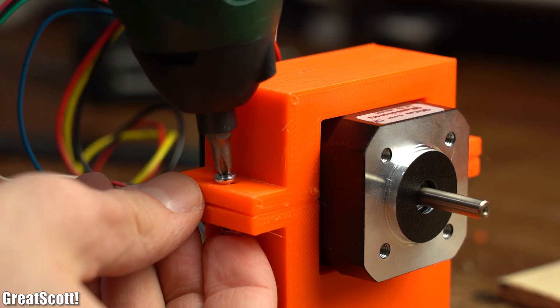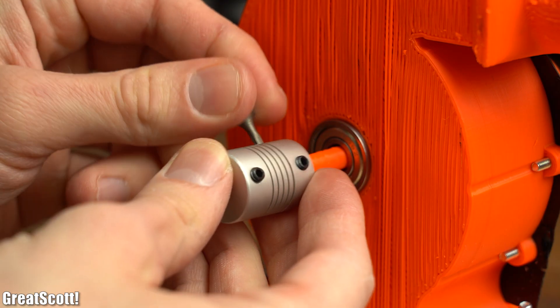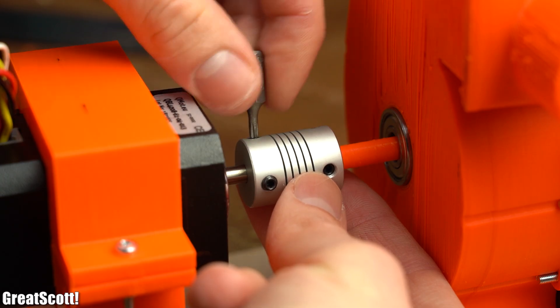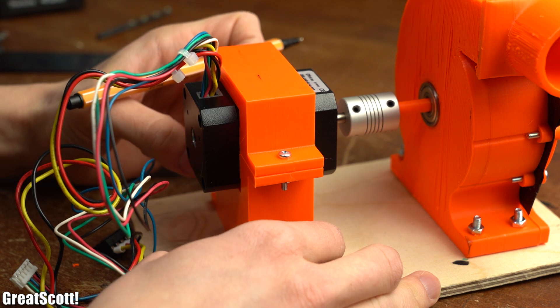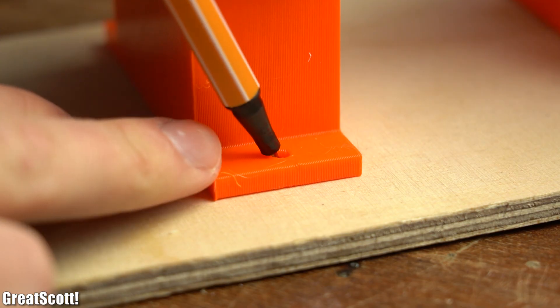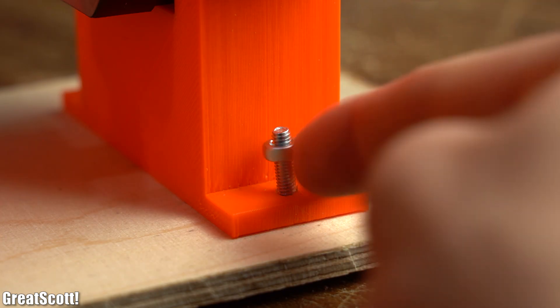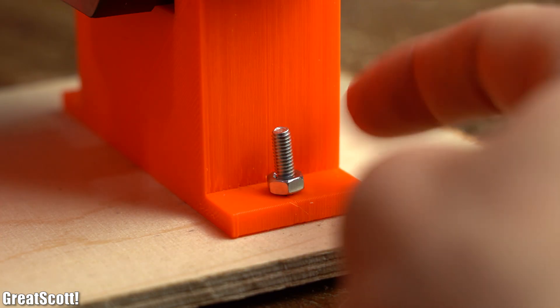Afterwards I fixed the motor inside the motor mount and added the motor shaft coupler to the wheel and the motor shaft in order to determine a suitable position for the motor mount. After then marking its mounting holes and drilling them as well, I secured it with M4 bolts and nuts to the wooden board.